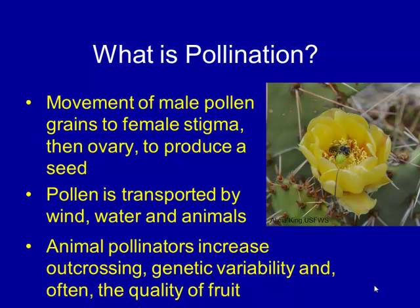Animal pollinators are useful to plants because they increase their ability to outcross, which produces more genetic variation. So if conditions change, some members of the population might be more suited to those new conditions. Over time, that's useful to the plant species.